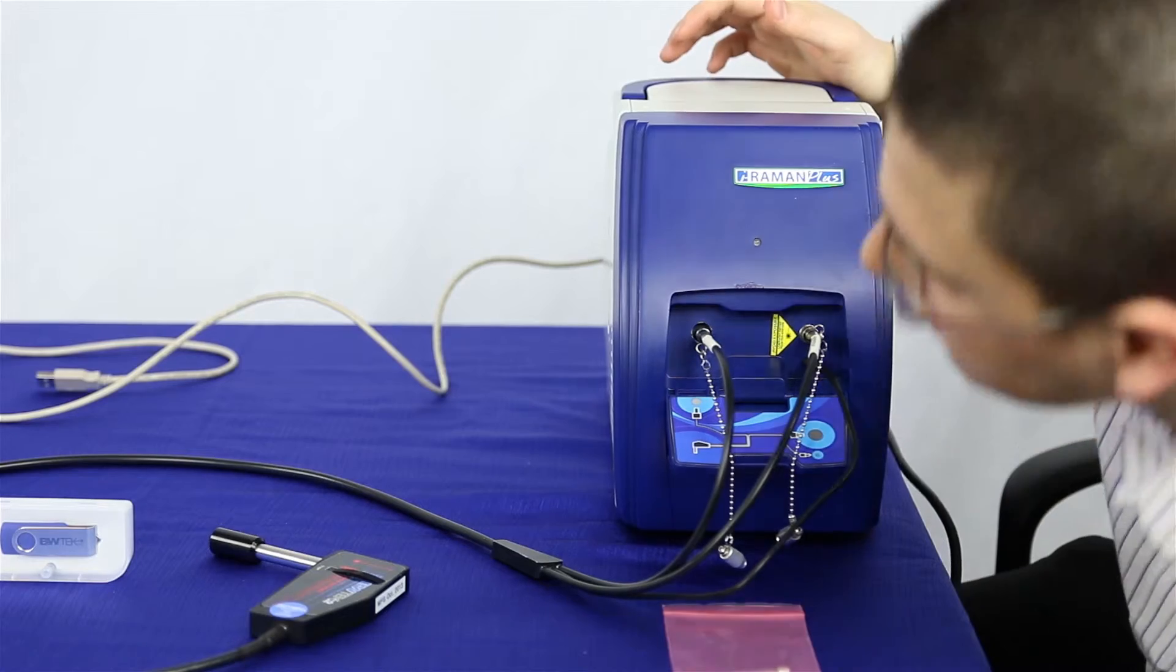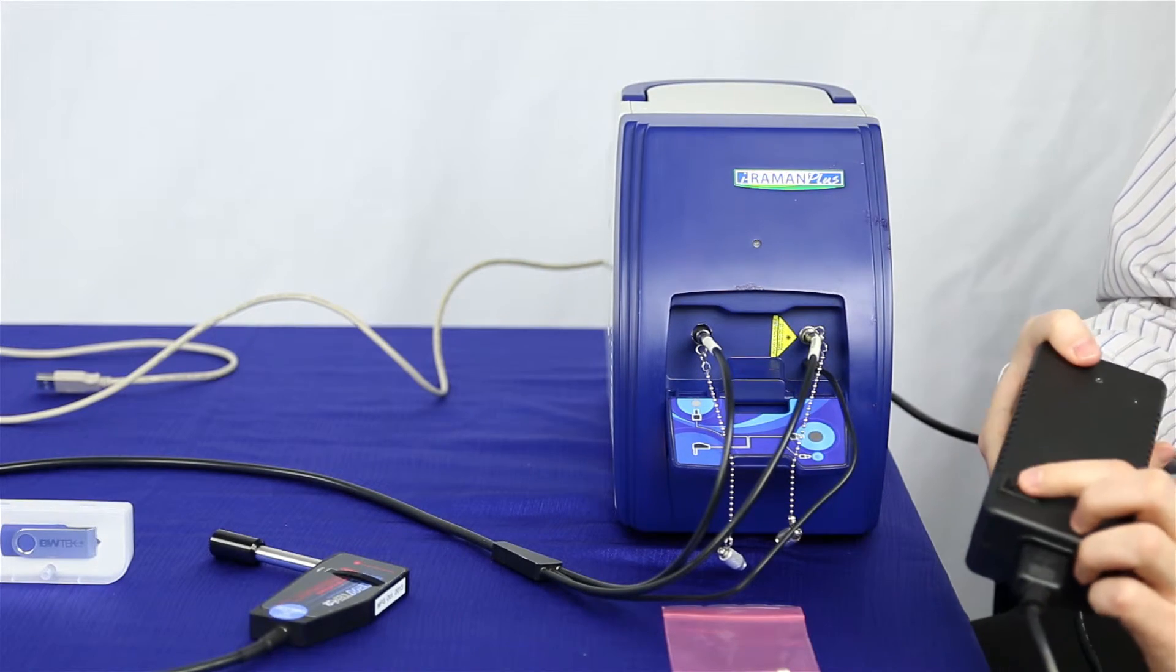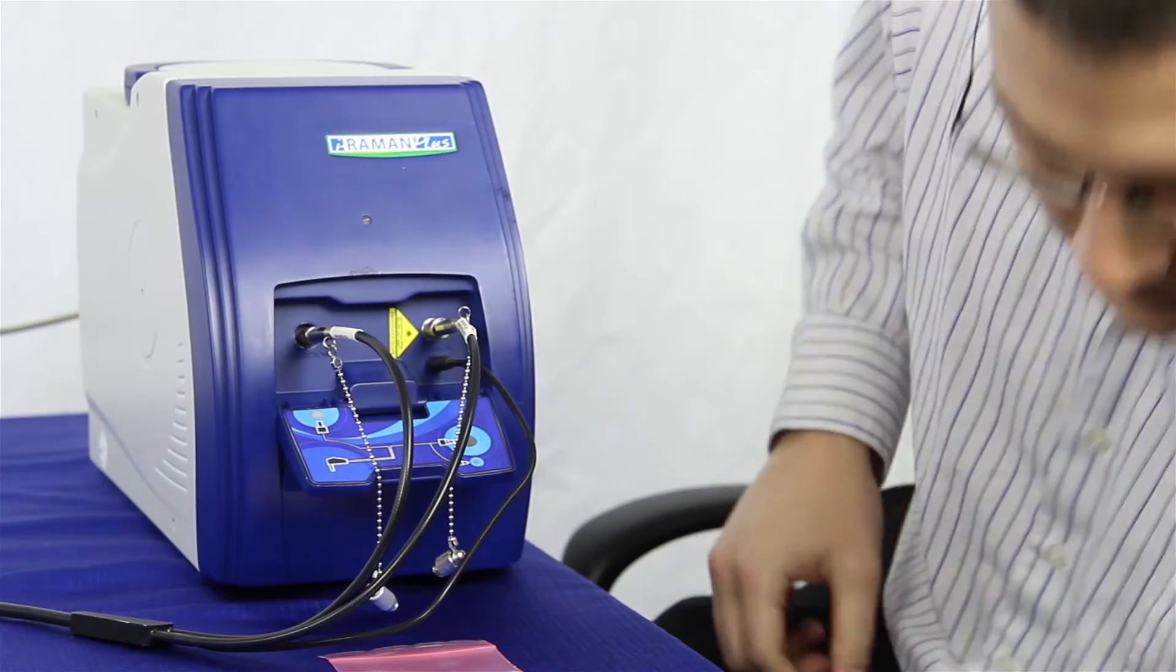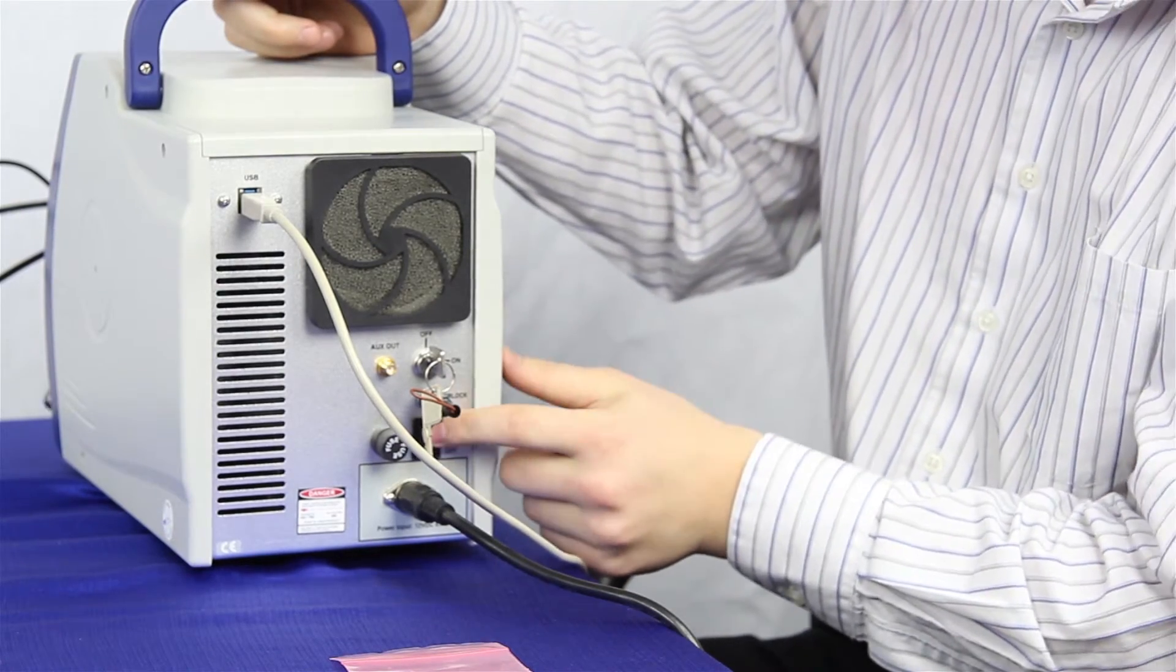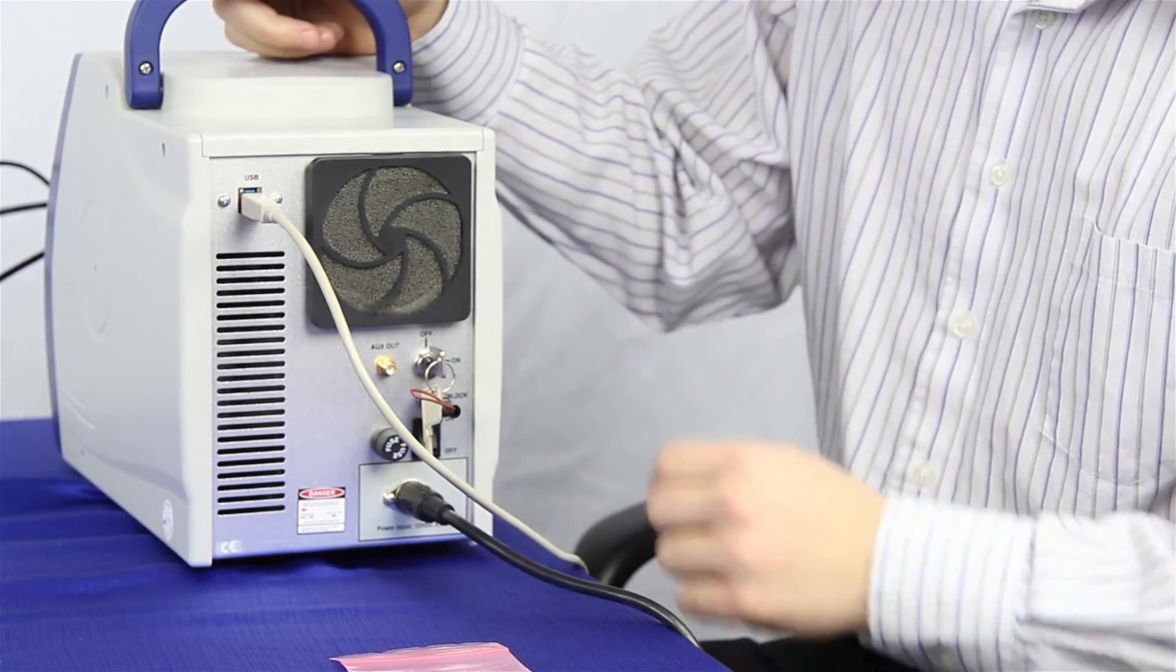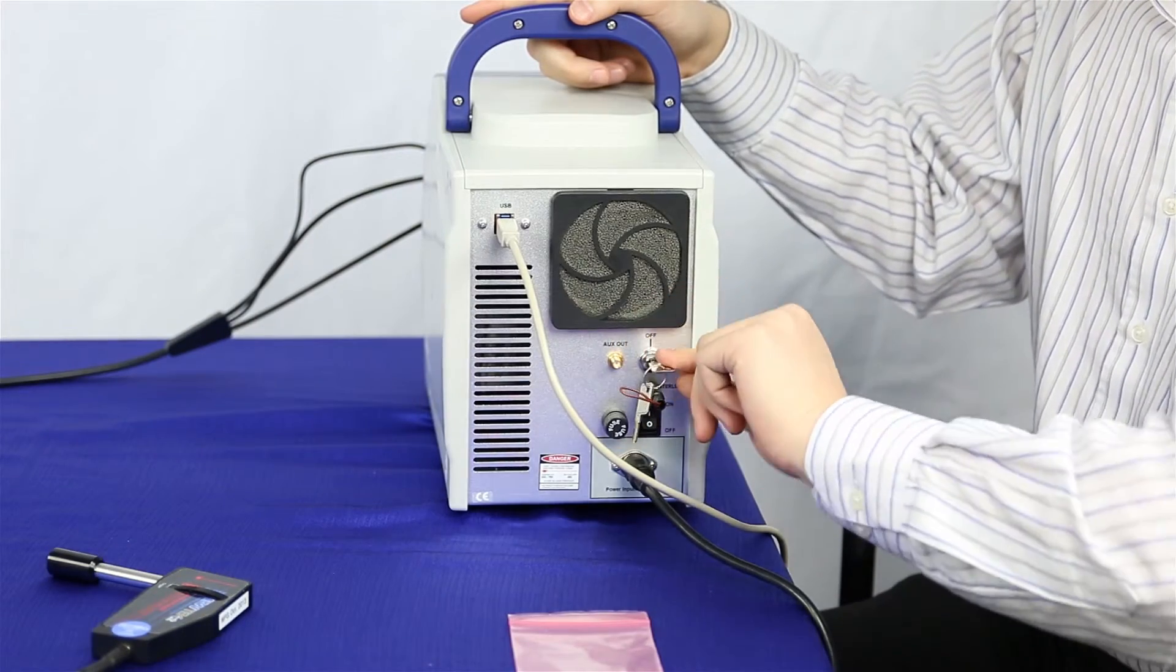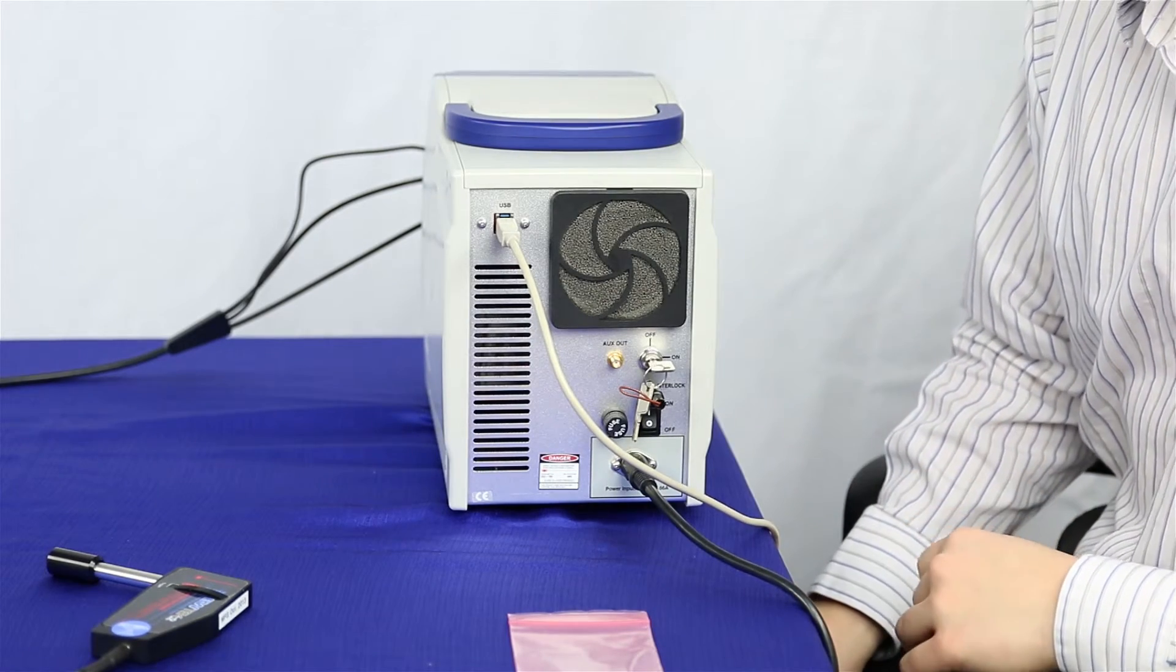Now to turn it on, first of all, you'll want to make sure you turn on the power switch on the power supply. Next, you'll want to turn on the power switch in the back. And finally, you'll want to turn the laser key to the on position. This way, your unit is operational.